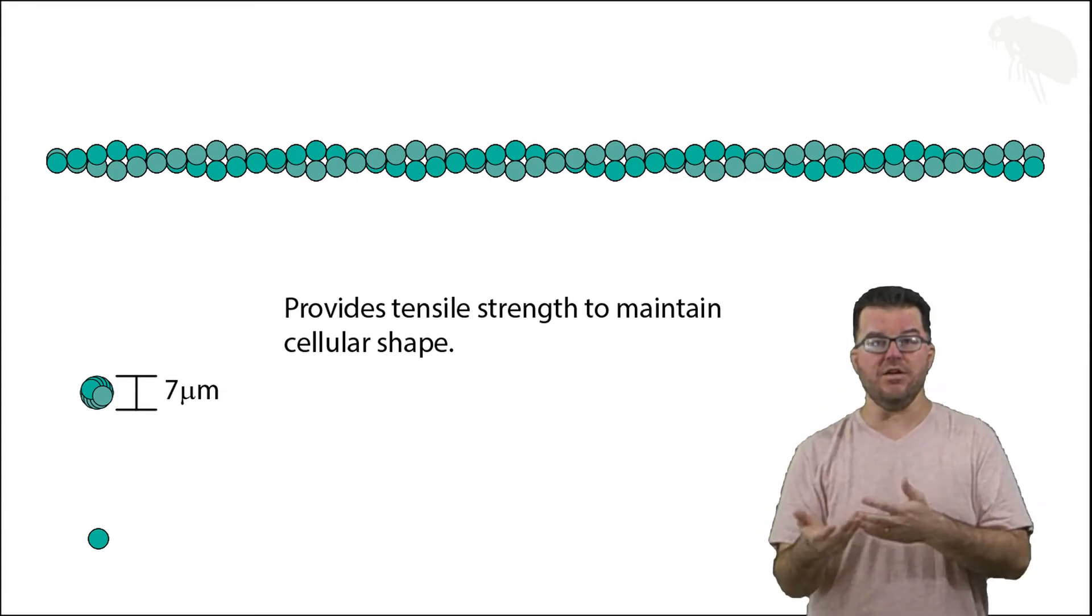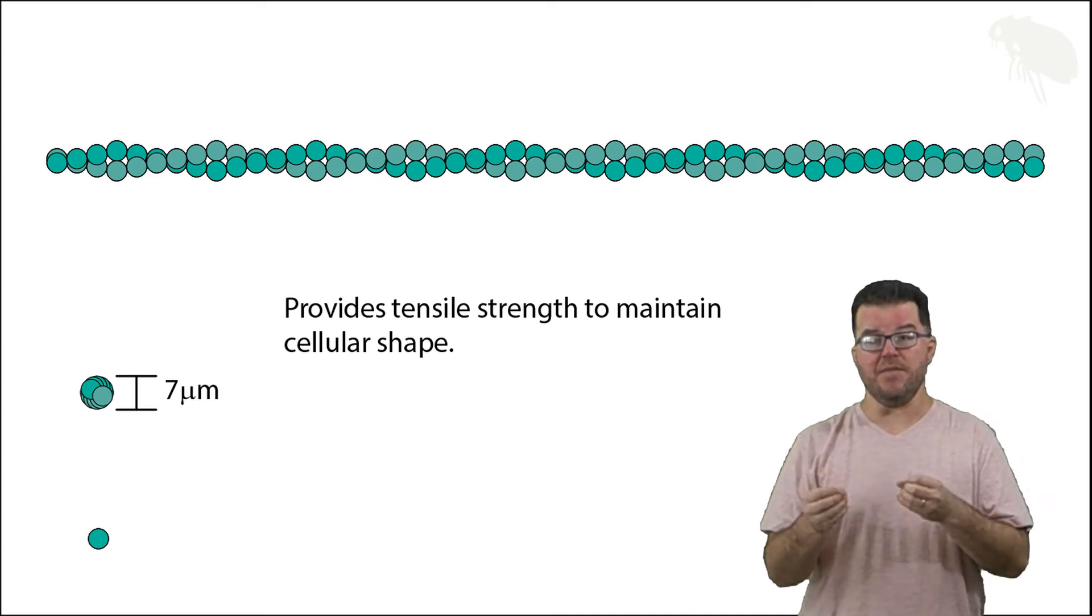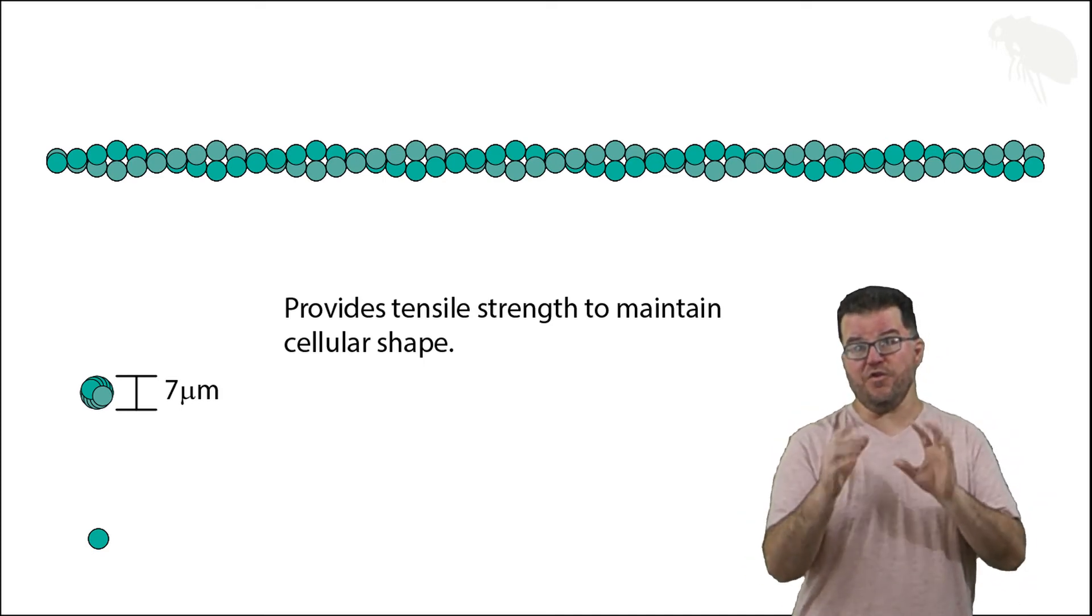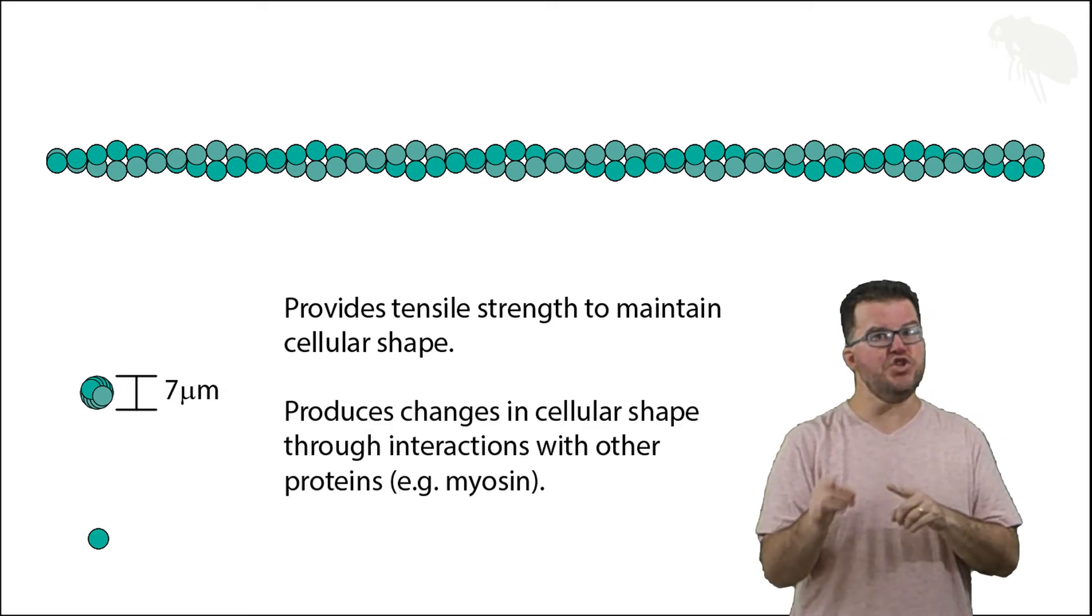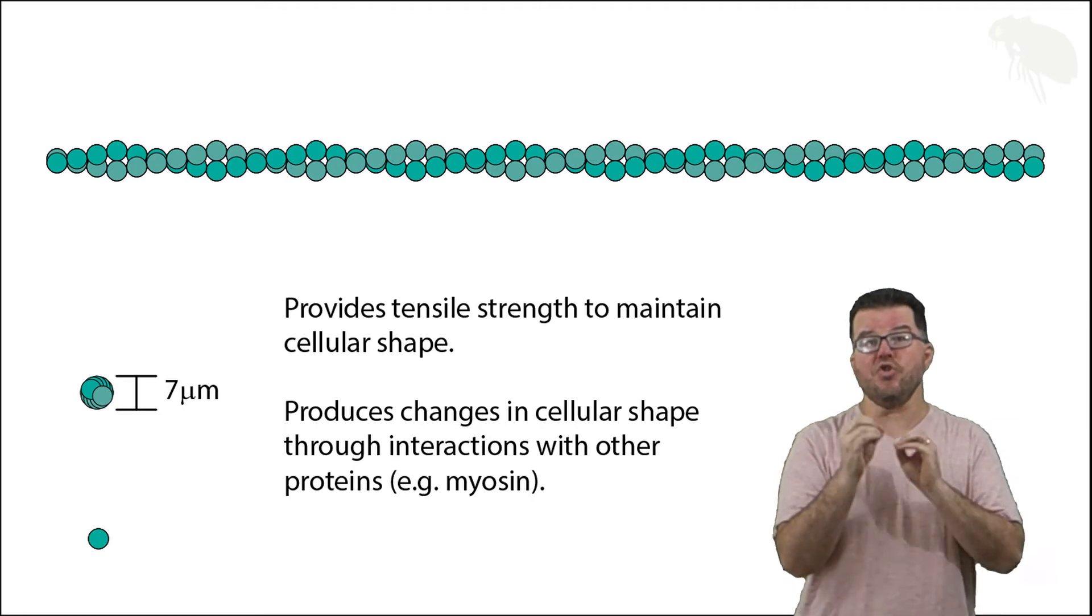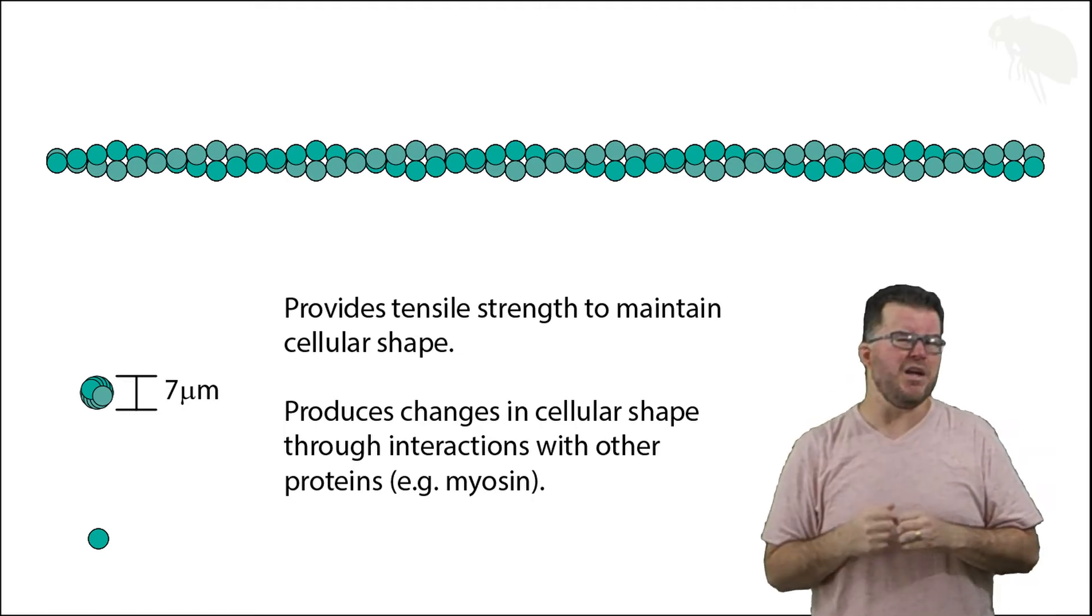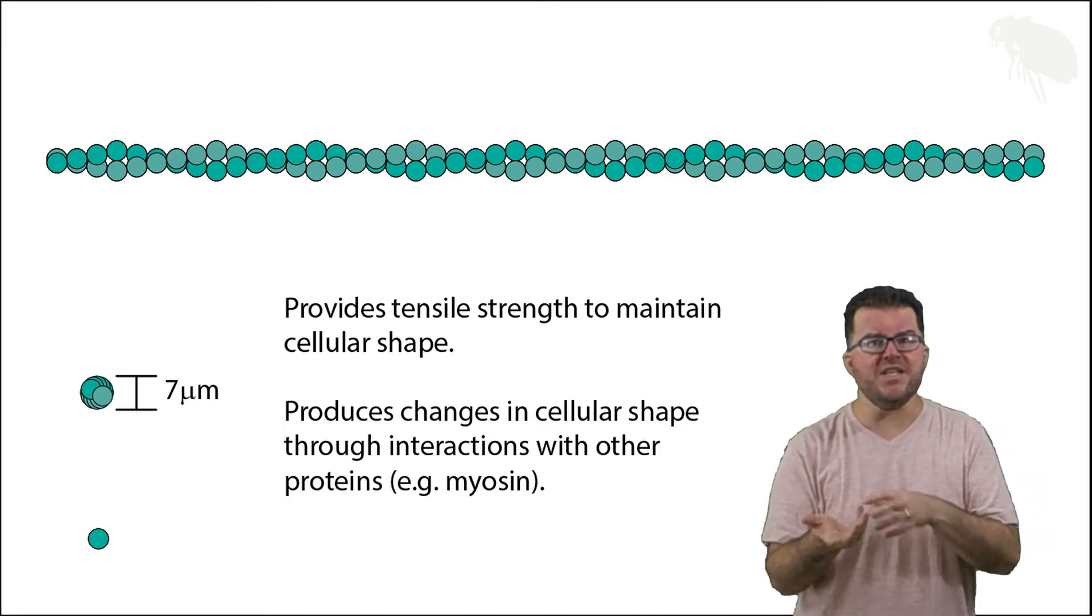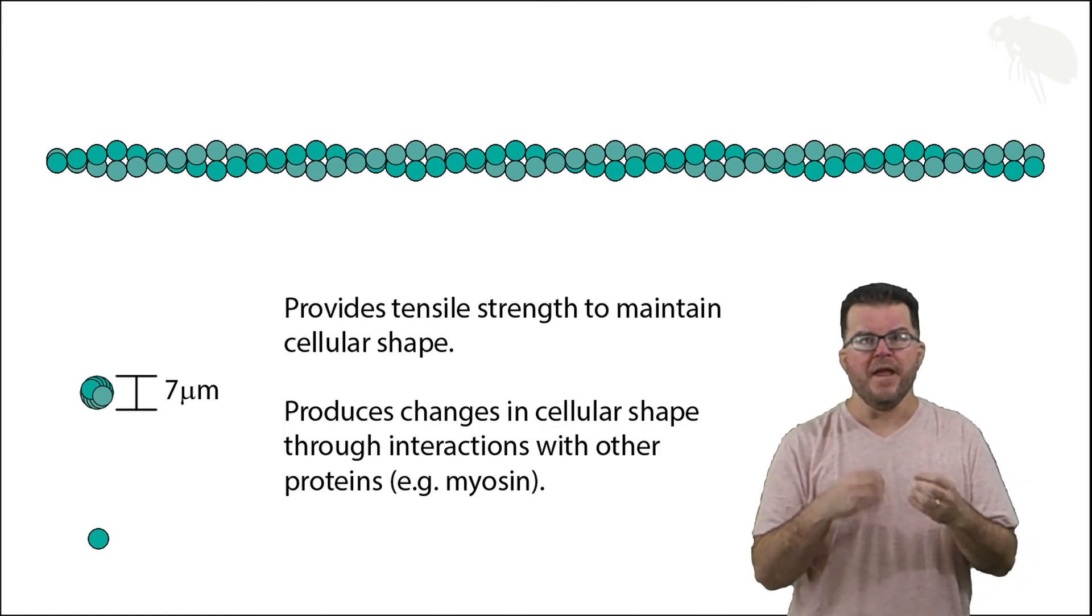They're not only useful for maintaining shape but also for changing it because these proteins, these microfilaments, can interact with other proteins like a protein called myosin. These are motor proteins to produce movement and change the shape of the cell.